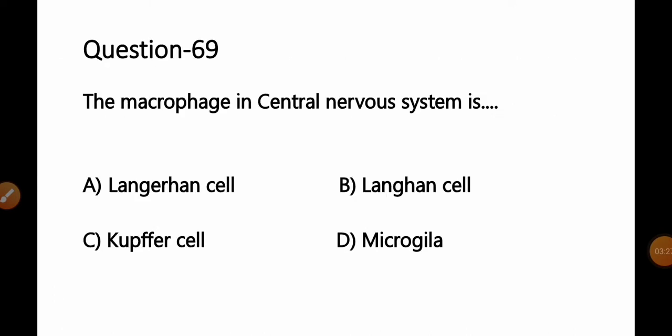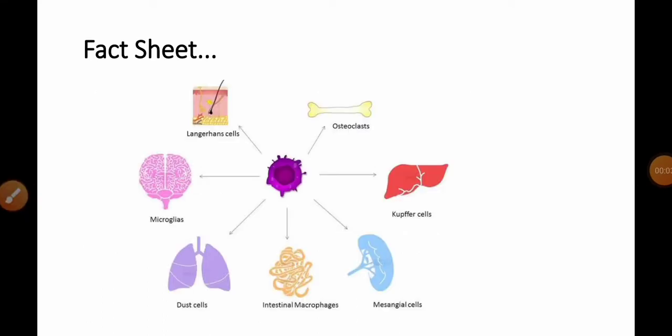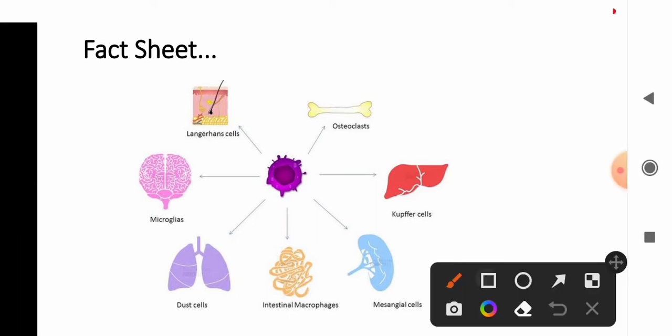Question number 69: The macrophage in the central nervous system is — Option A: Langerhans cell; B: Langerhans cell; C: Kupffer cell; D: microglia. In a previous question, we discussed that in the liver, macrophages are known as Kupffer cells. In the kidney, they are known as mesangial cells.